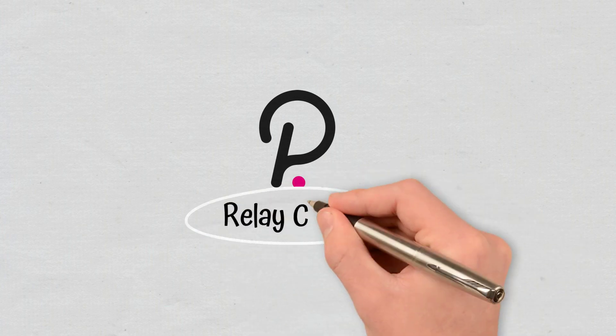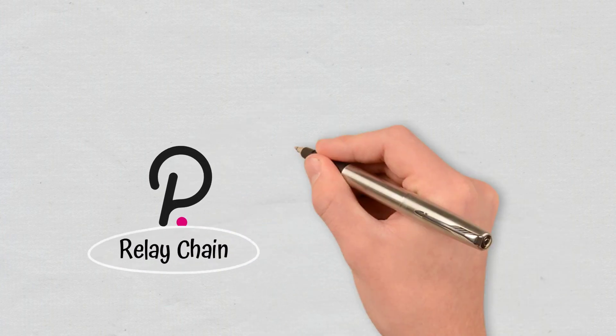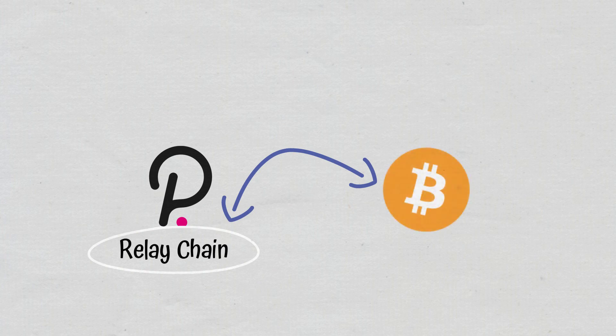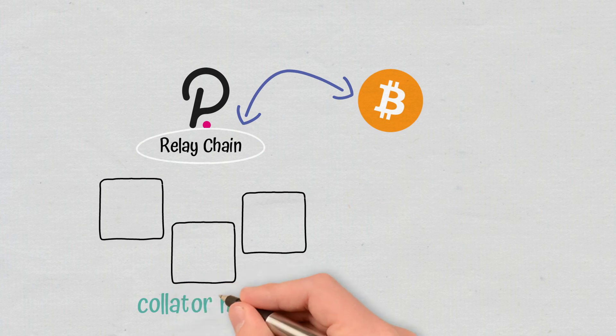Let's say we want to send information between Polkadot's main blockchain, which is Relaychain as it is also called, and the Bitcoin blockchain. In the case of the Polkadot ecosystem, there are so-called collator nodes.